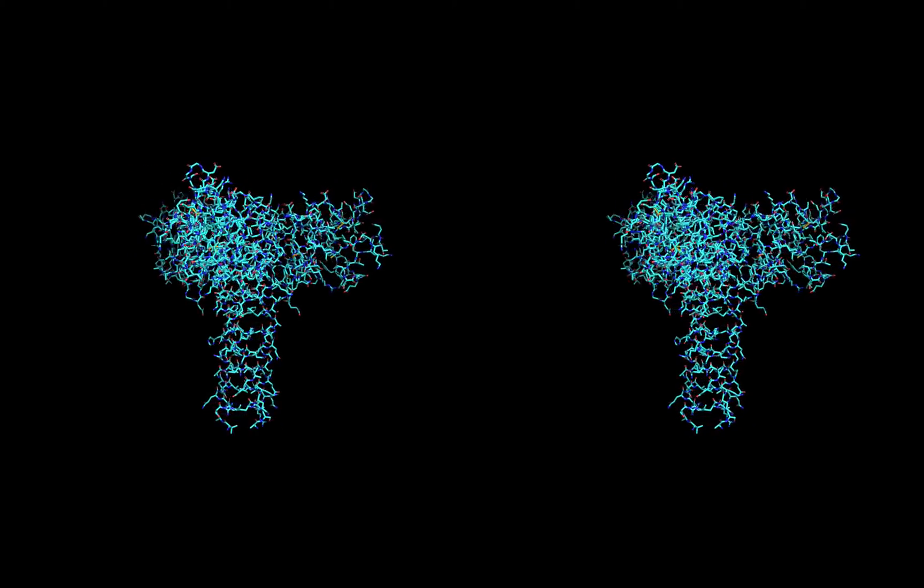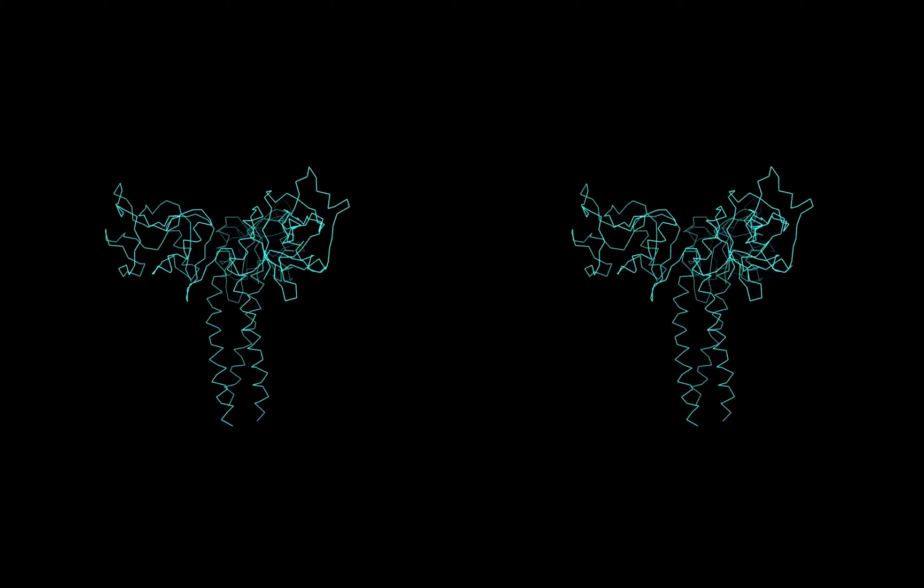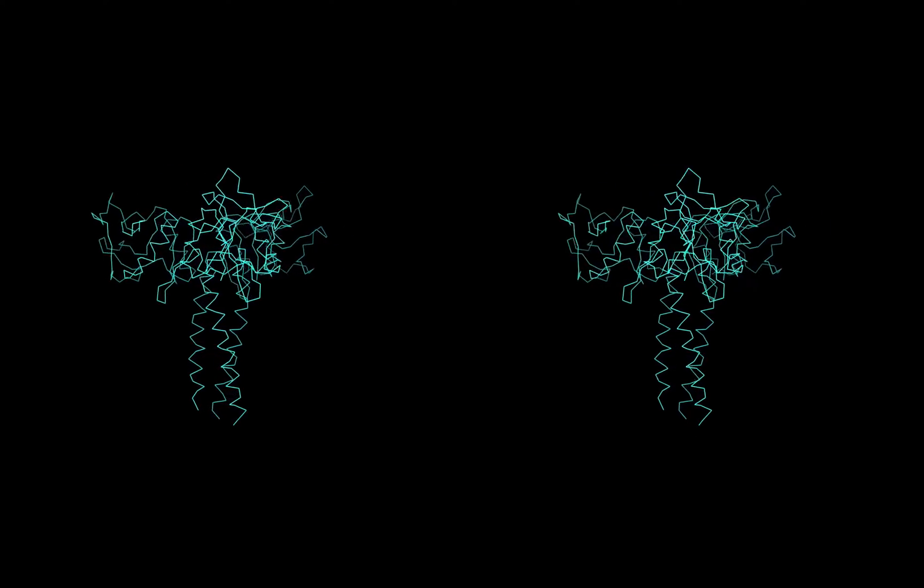We can simplify this a lot with a rendering called the alpha trace. This makes a line to the peptide bonds of the protein, ignoring side chains.